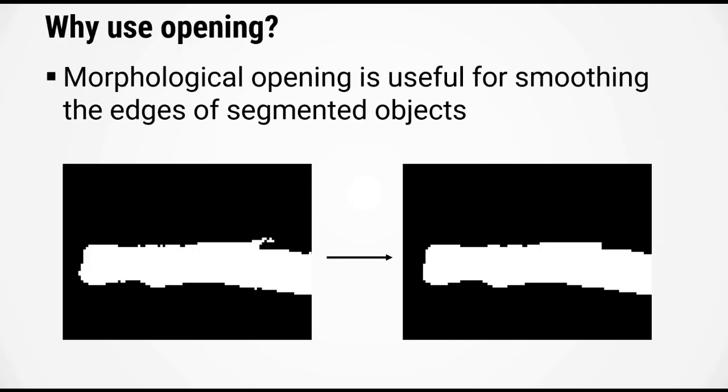So why would you want to use morphological opening? Well it turns out that opening is incredibly useful. And I'll show you a few examples here. So one of the things that morphological opening is really useful for is for smoothing the edges of segmented objects. Very often when you segment an object you might see that the edges are jaggedy and might have weird protrusions like this. But running morphological opening with a disk shape structuring element can smooth it out.